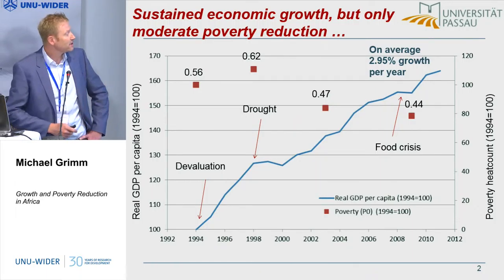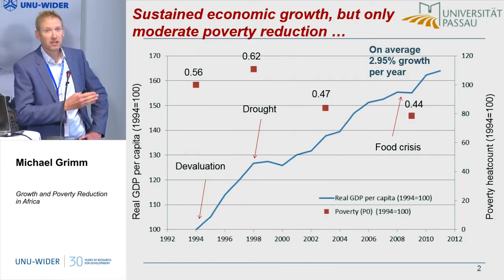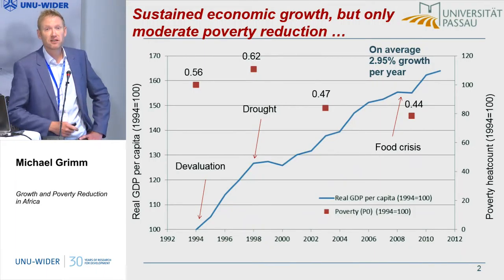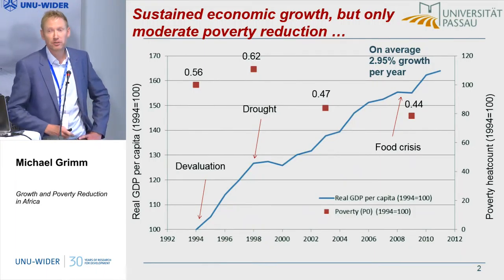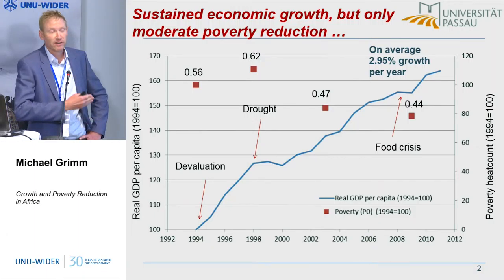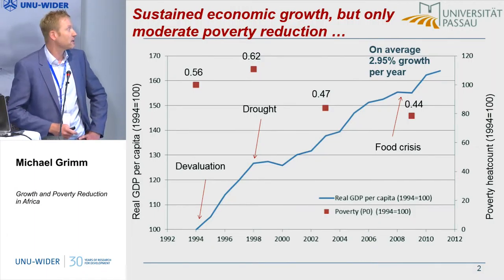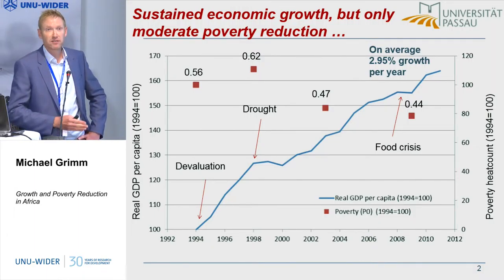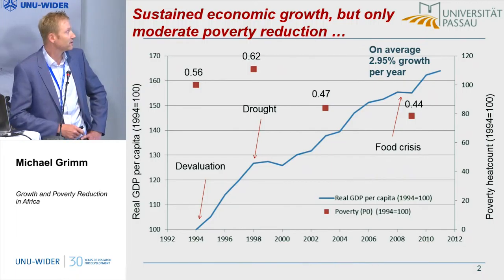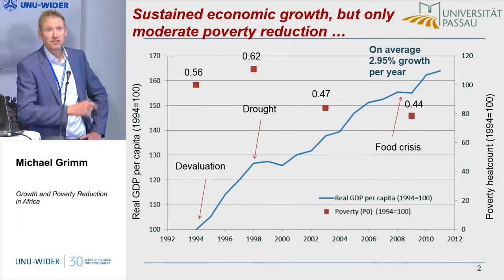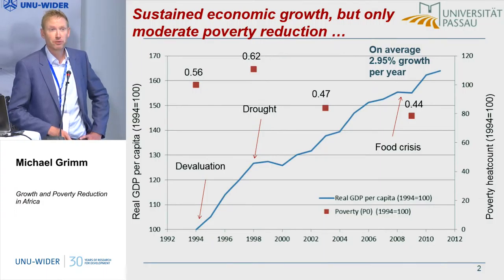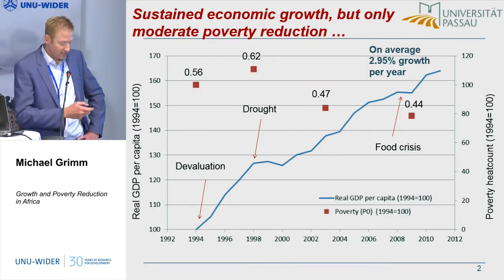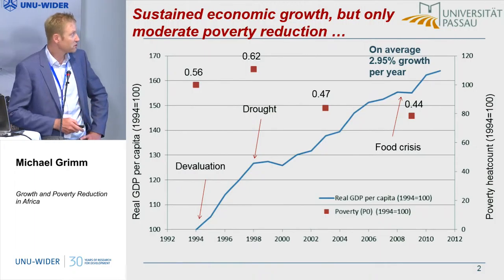The high level of poverty in 1998 is in particular due to the drought that just preceded this survey — a survey done directly after a very bad harvest will, of course, give you a very high level of poverty. If you look at the overall trend, you see that there's only modest poverty reduction compared to the growth of GDP that we experienced here.